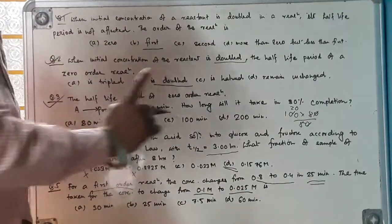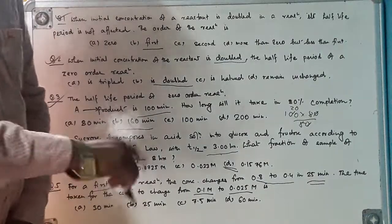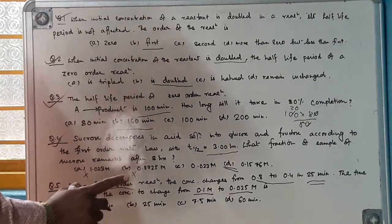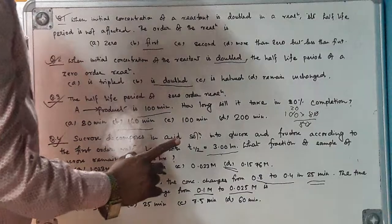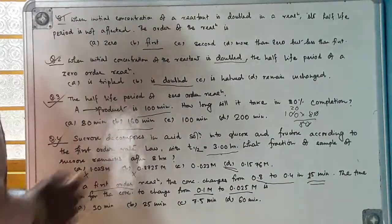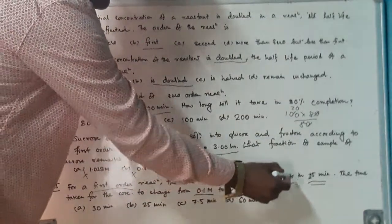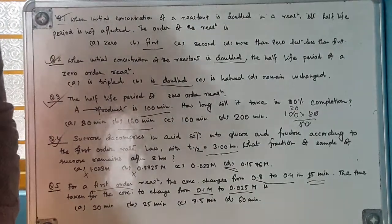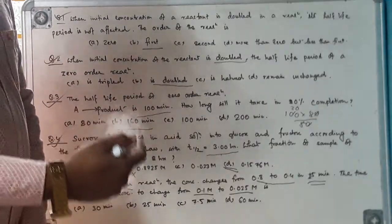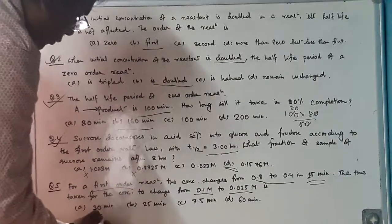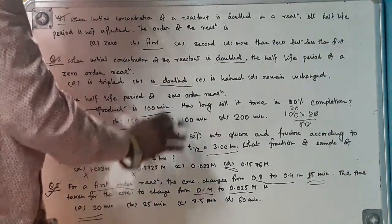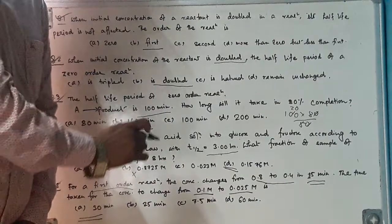Continuing Question 5: The concentration changes from 0.1 to 0.025, which involves two half-lives (0.1 → 0.05 → 0.025). Since each half-life is 25 minutes, the total time is 2 × 25 = 50 minutes. So the answer is 50 minutes.